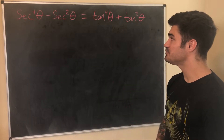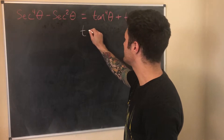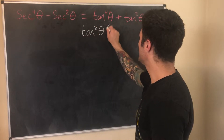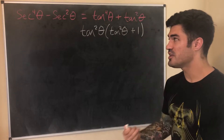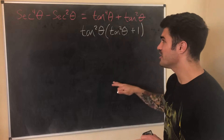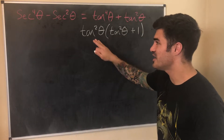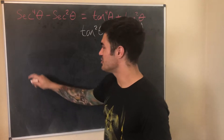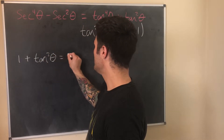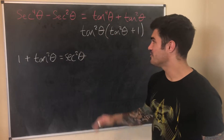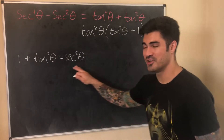The first thing I'll do is factor — we have a common factor of tan²θ, so I'll factor that out. I'm left with tan²θ times (tan²θ + 1). Now I want to think about the end goal: we want expressions with secant. A clear relationship between tangent and secant is the Pythagorean identity: 1 + tan²θ = sec²θ. Since we have tan² in both terms, that's a good hint we'll use this identity at least once.